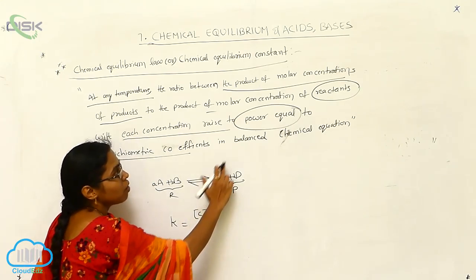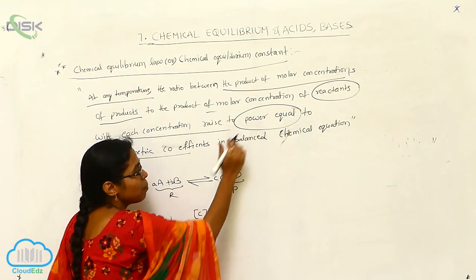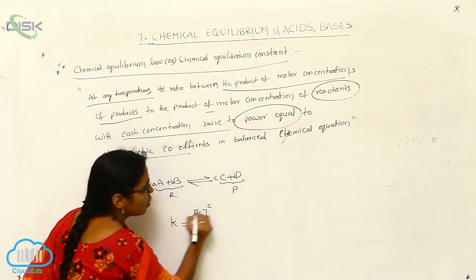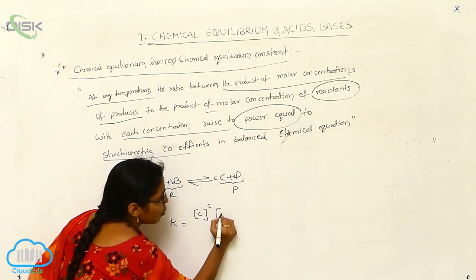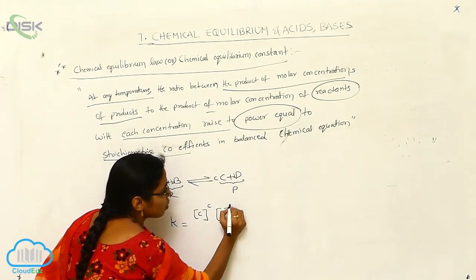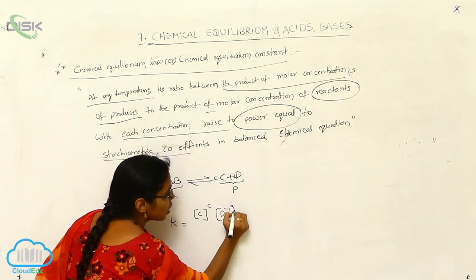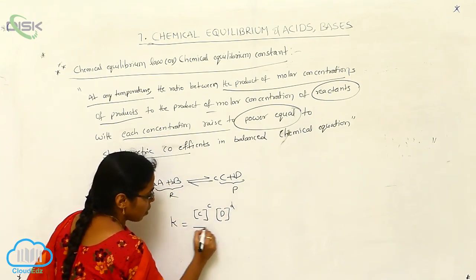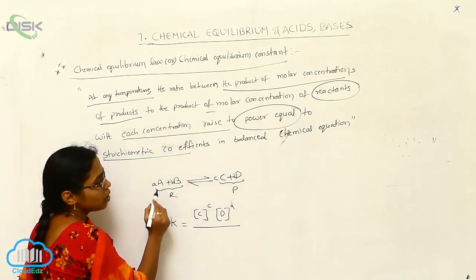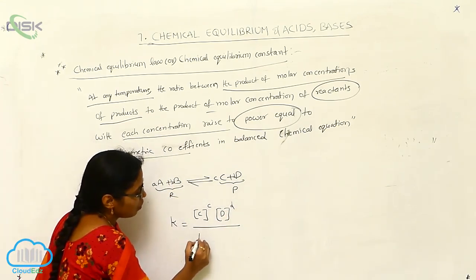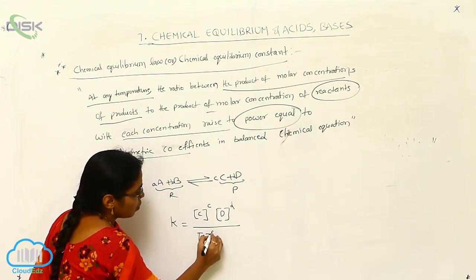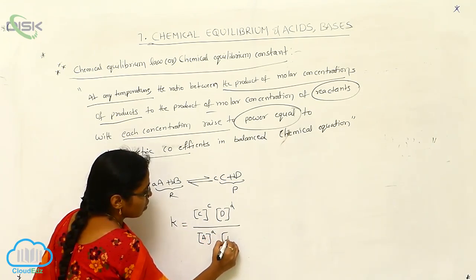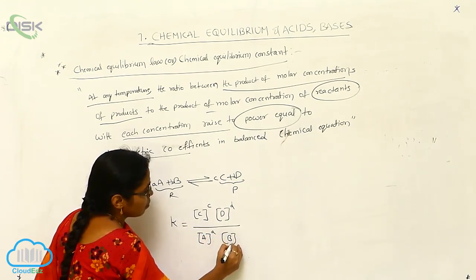The concentration of C is always written using the power, so C to the power c. Next, one more product is D, and for this one the concentration power is d. For the molar concentration of reactants, it is reactant A and reactant B.